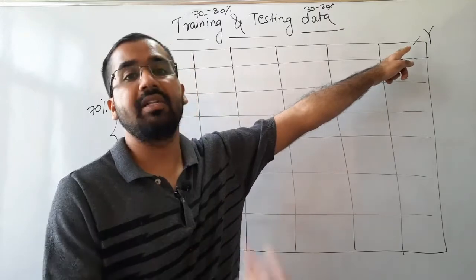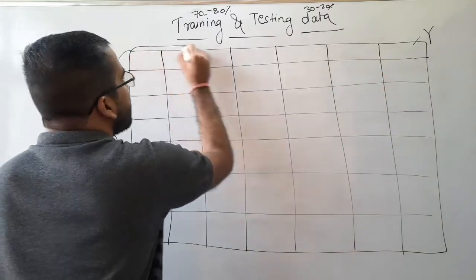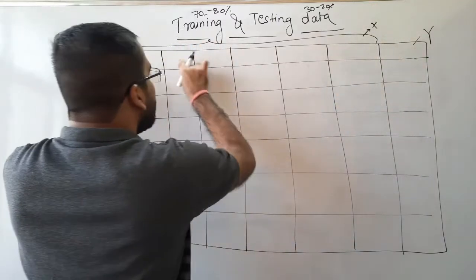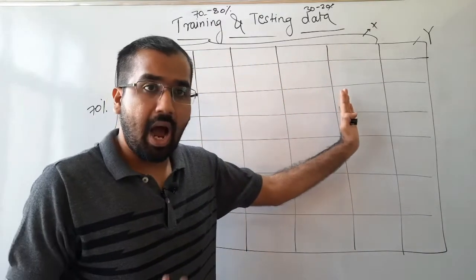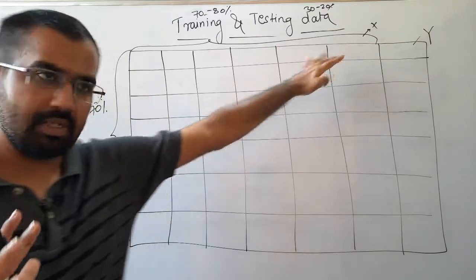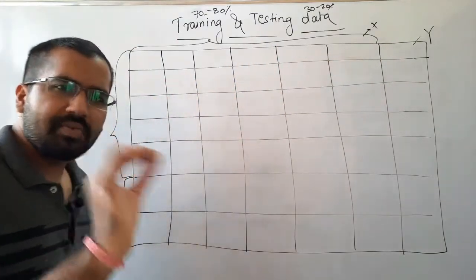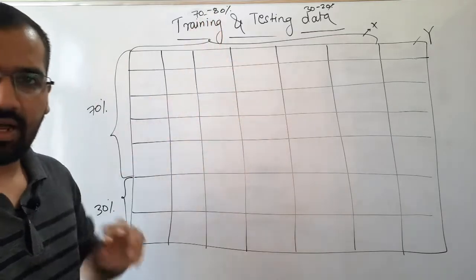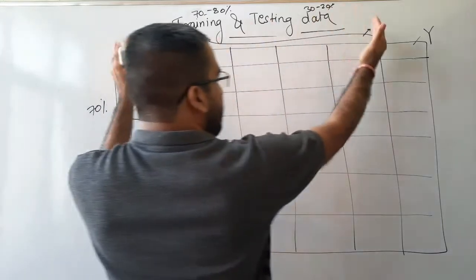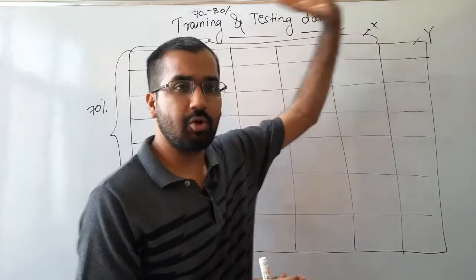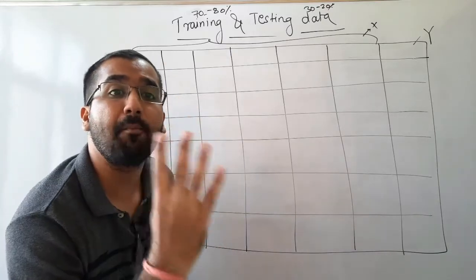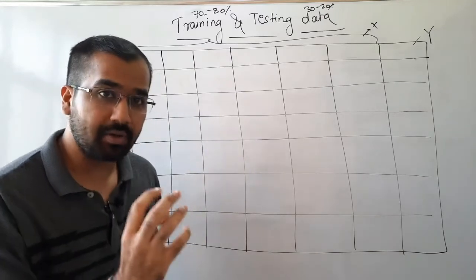So we simply denote the dependent or target variable as Y, and all the independent factors — say six factors — are denoted as X. We have now split the data from two perspectives: first, training data vs. testing data; and second, independent variable X vs. dependent variable Y. If we overlap these two splits, we generate four important elements.